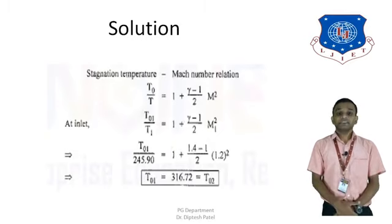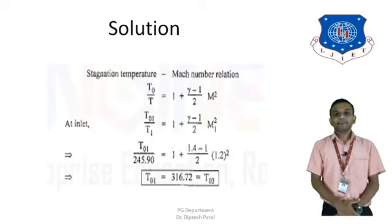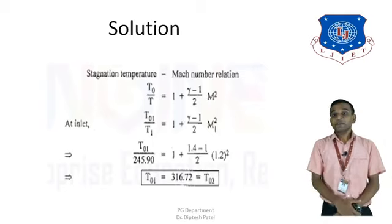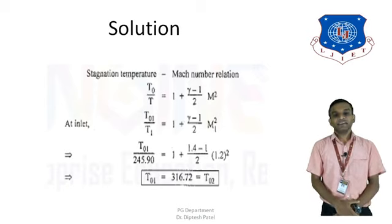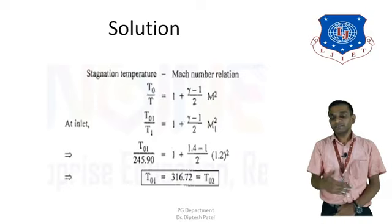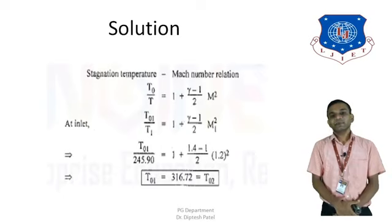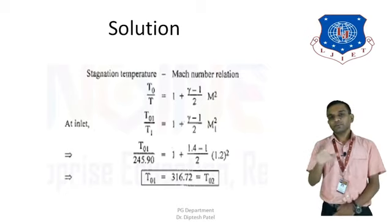Now using the Mach number–stagnation temperature relation: T0/T = 1 + (γ−1)/2 × M². For the inlet, T01/T1 = 1 + (γ−1)/2 × M1², which gives T01 = 316.72 K. Since the flow through the diffuser is adiabatic, T01 equals T02, so T02 = 316.72 K.